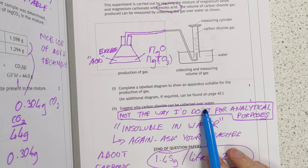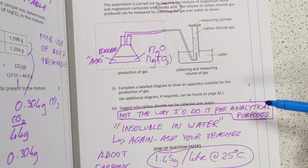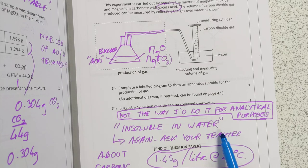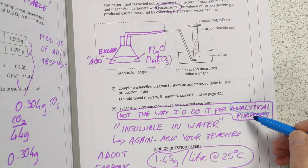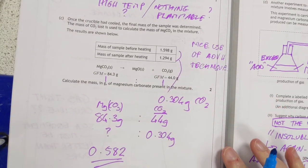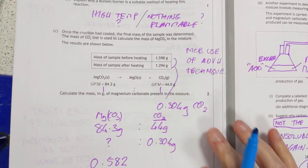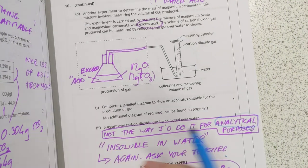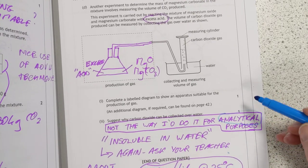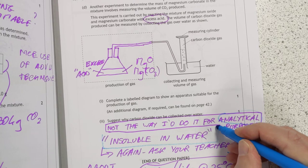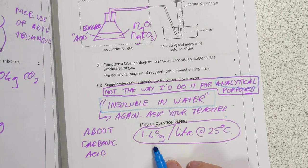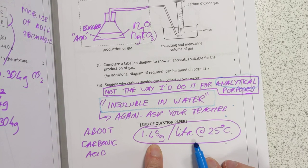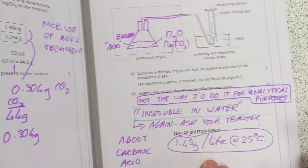Suggest why carbon dioxide can be collected over water. Again in inverted commas, it's insoluble in water. Go and ask your chemistry teacher again, see what they say. This is not the way I'd do it. For analytical purposes certainly, it's fine for like third-year level. But if I wanted a volume to actually use in a calculation, which is what they've done here, I know they've used a mass. Maybe my criticism is unfounded. But insoluble in water I think is the SQA's answer. That's what they're looking for. But go and ask your teacher that. Just out of curiosity I went and looked it up. This happens to be the actual solubility data of carbon dioxide at 25 degrees. That's quite a lot. Let's move on.